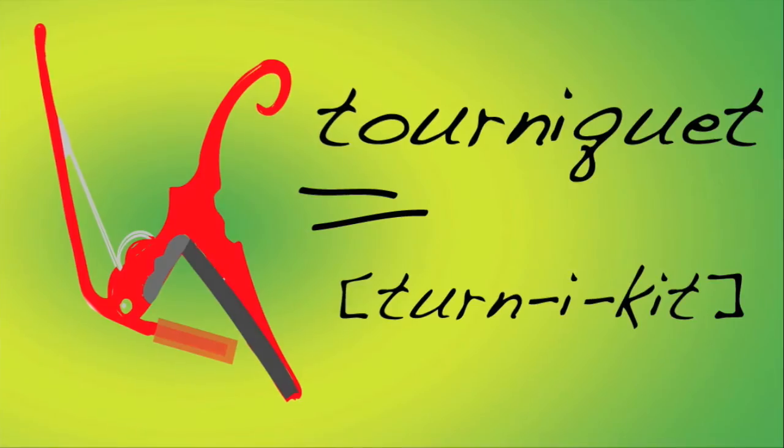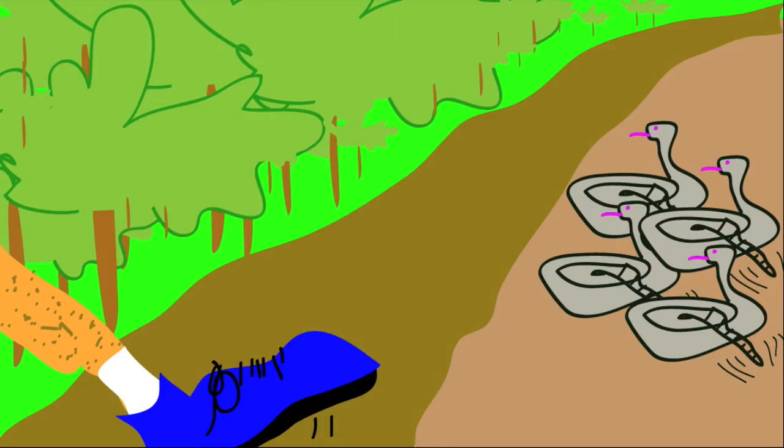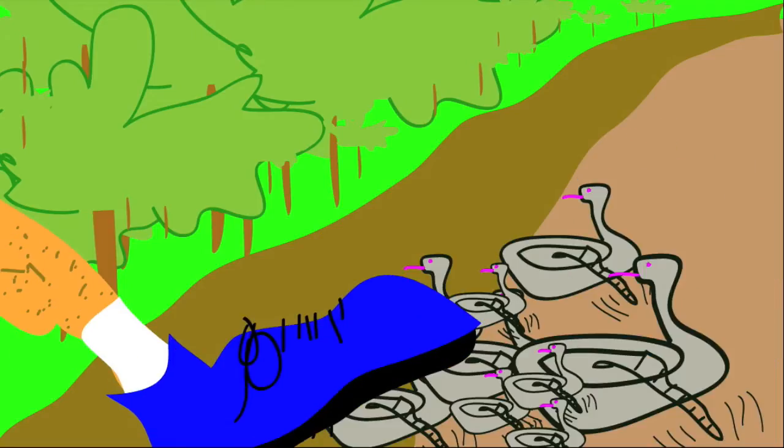Survival technique number three, a tourniquet. While you're hiking and playing guitar you step on a herd of rattlesnakes who lunge onto your forearm and end up biting you.